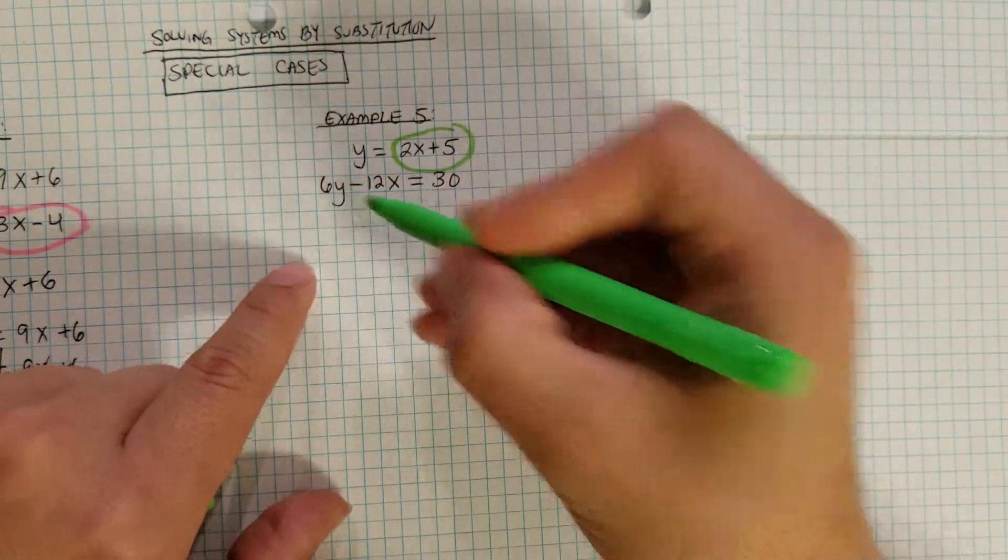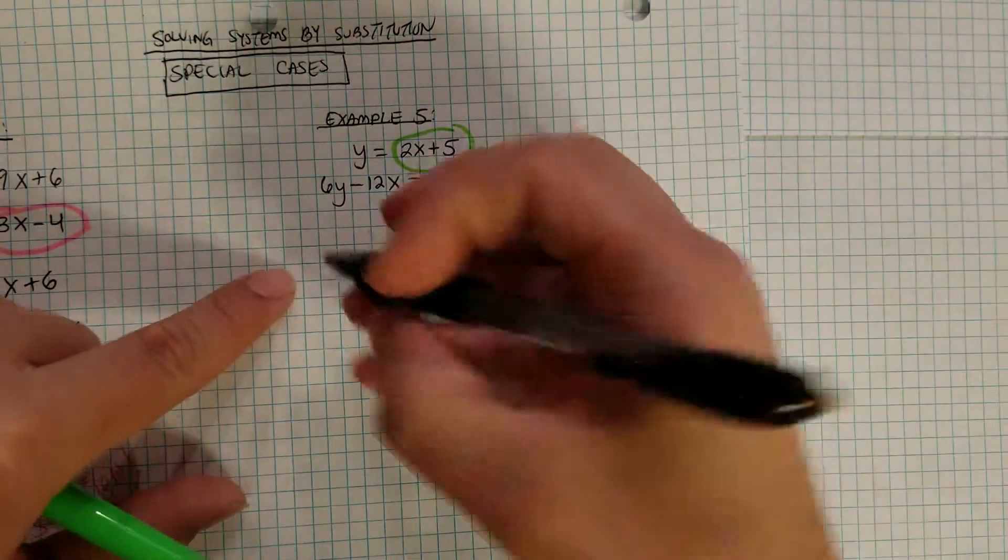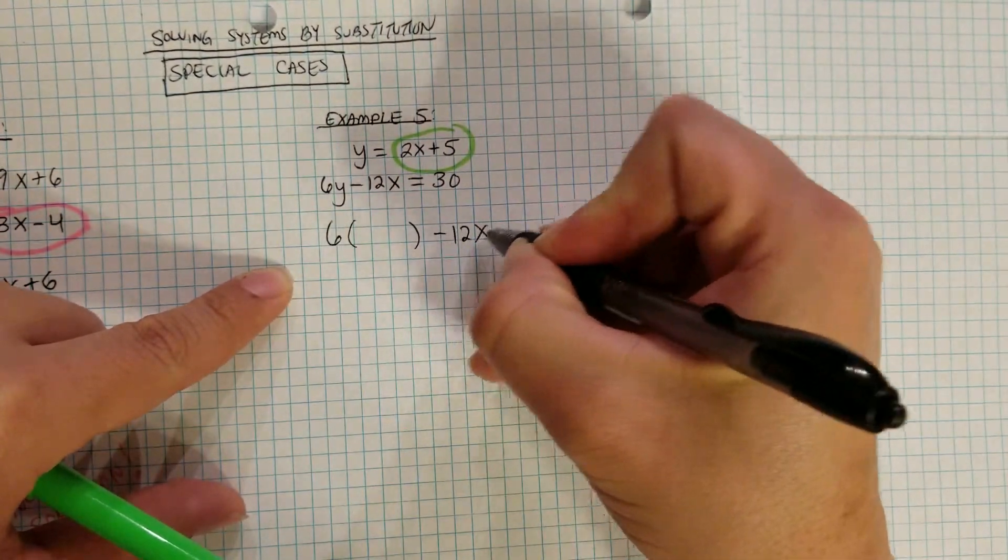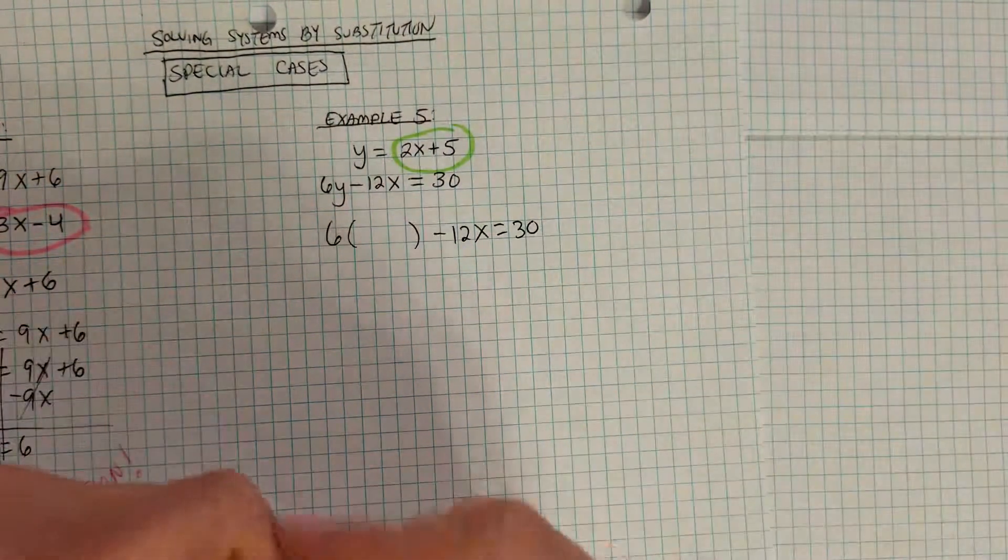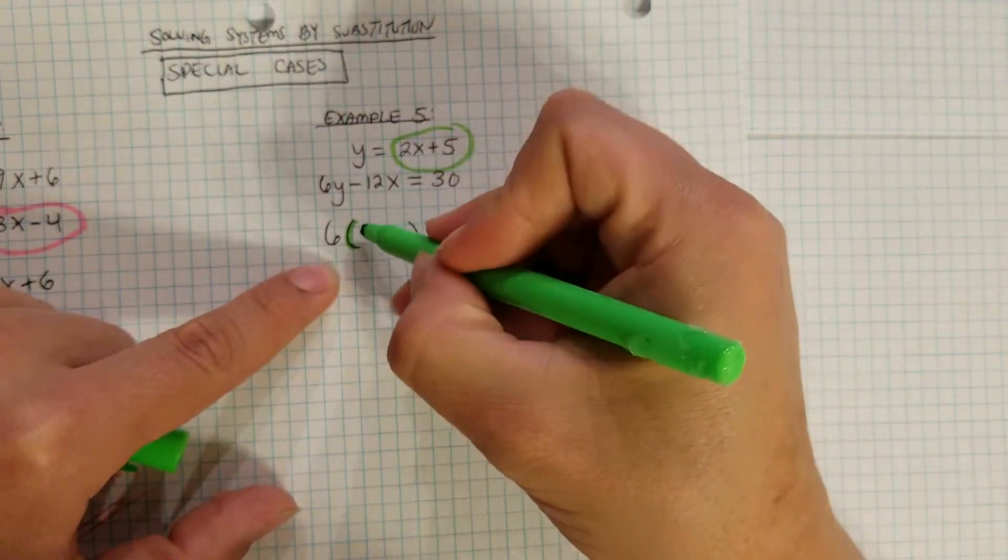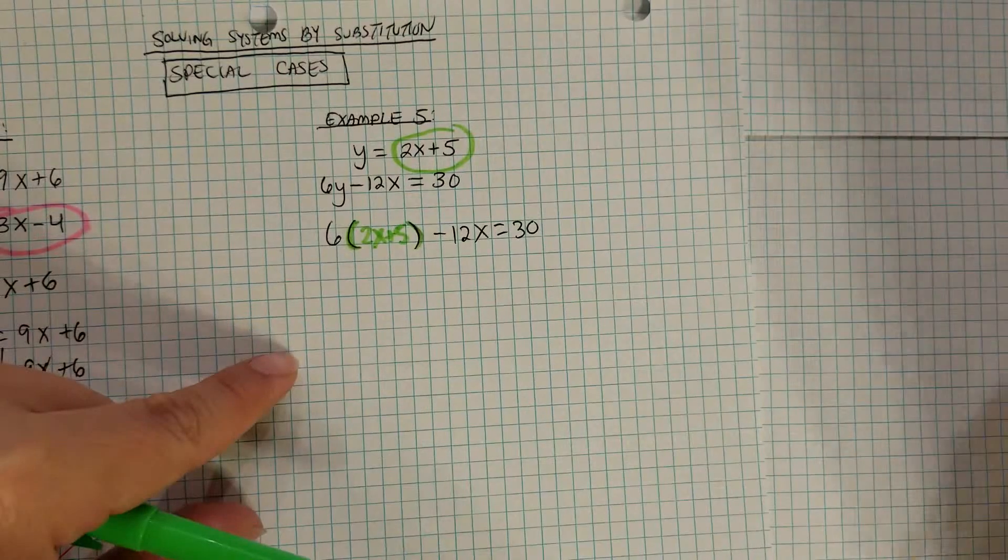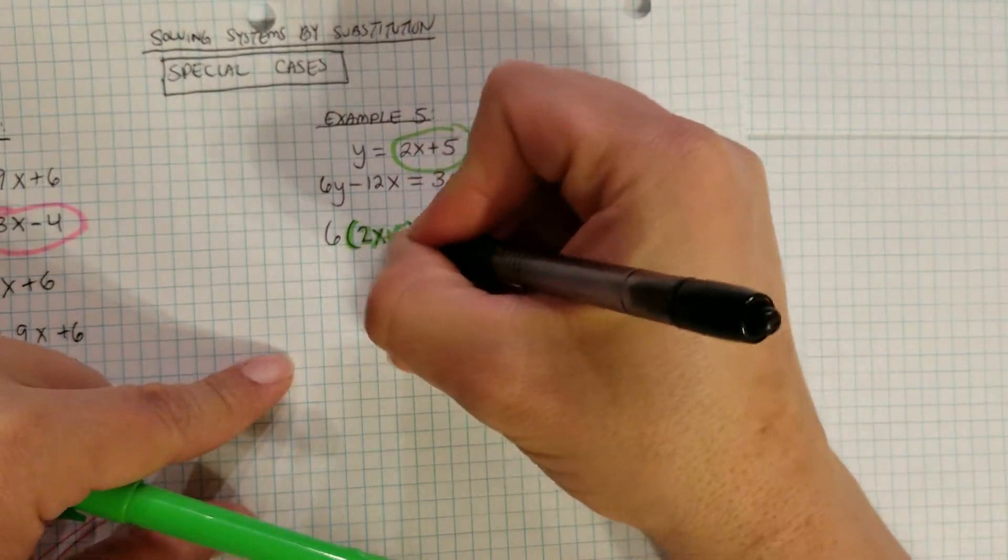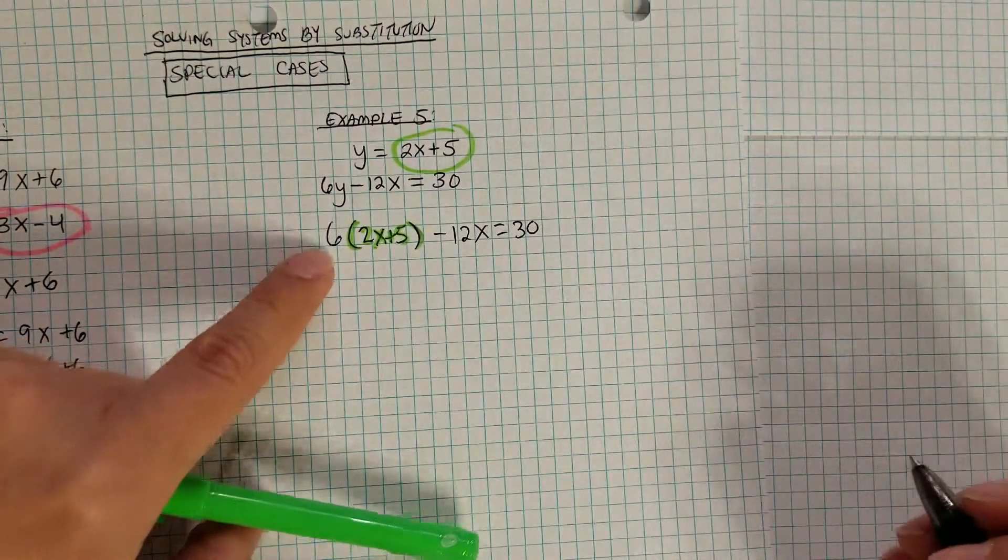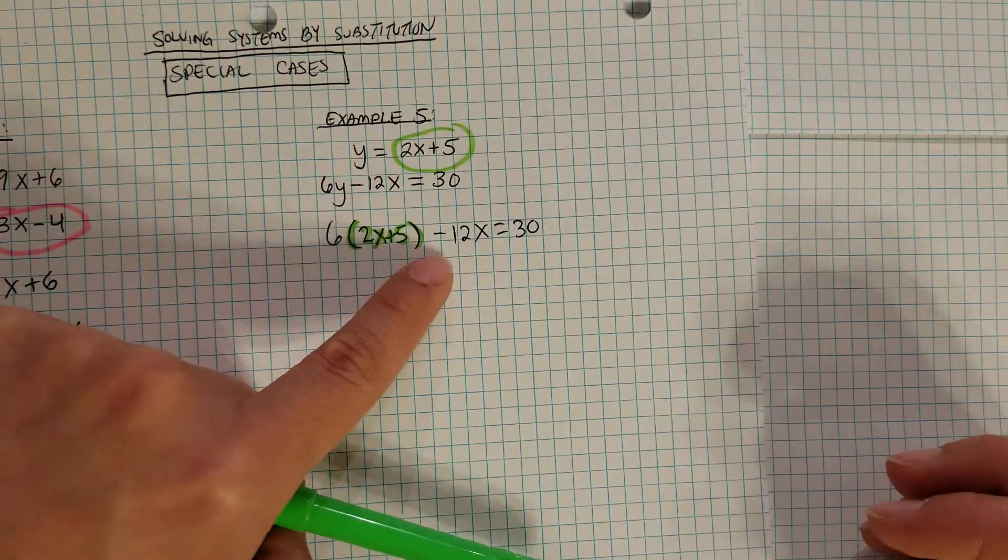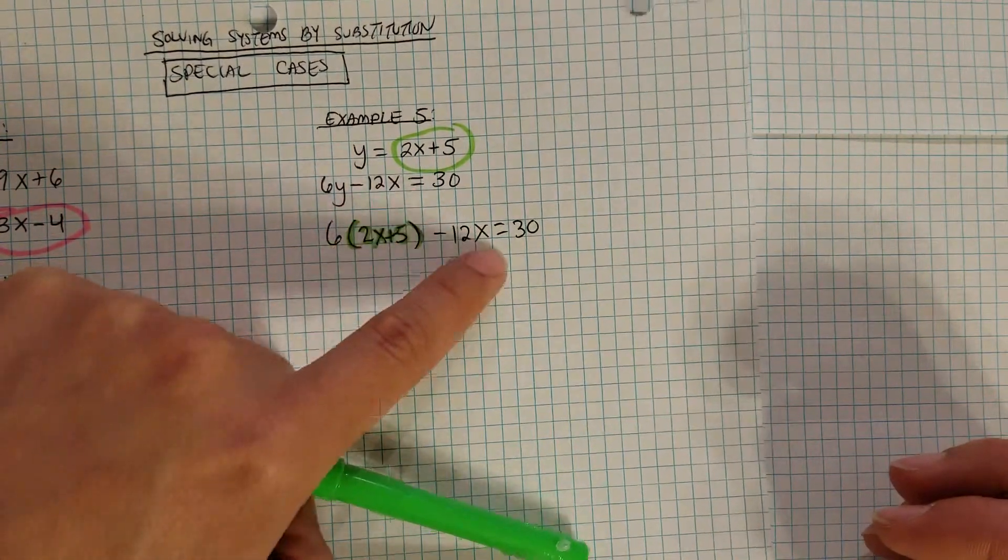We're going to replace that y in the other equation. So instead of 6y minus 12x is equal to 30, I'm going to write 6y, which happens to be 2x plus 5. So I'm replacing or substituting the value of y from the first equation. So 6 parentheses 2x plus 5, which came from the y, minus 12x, which came from here, equals 30.